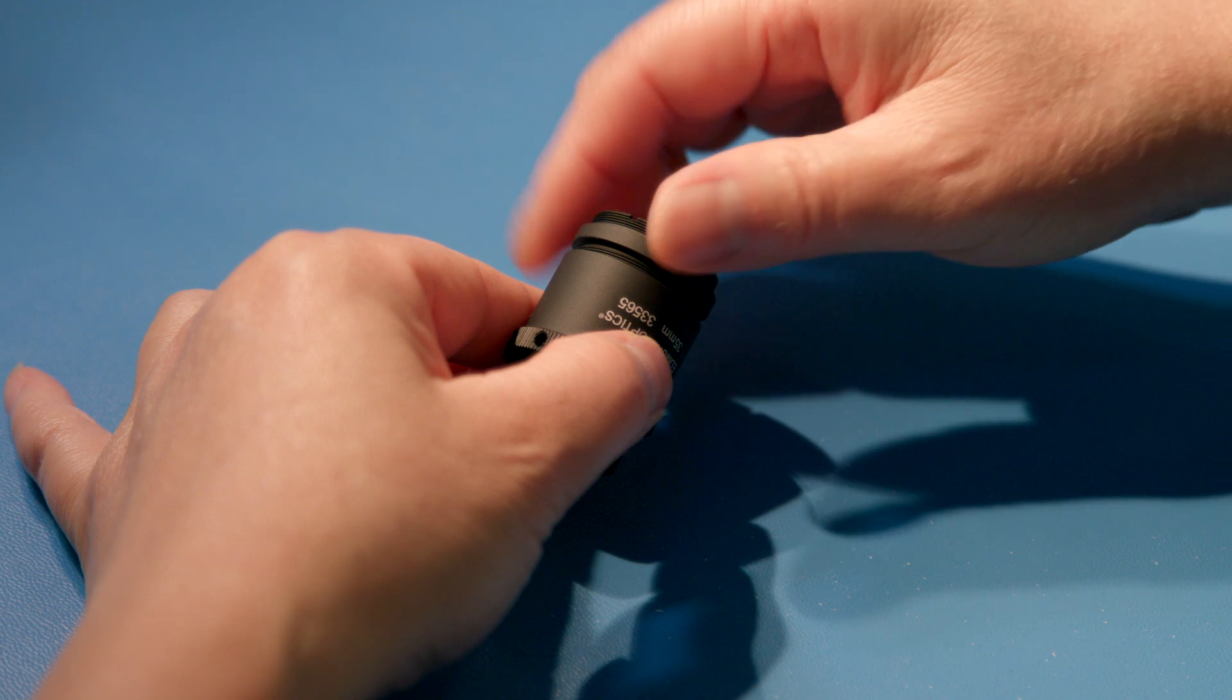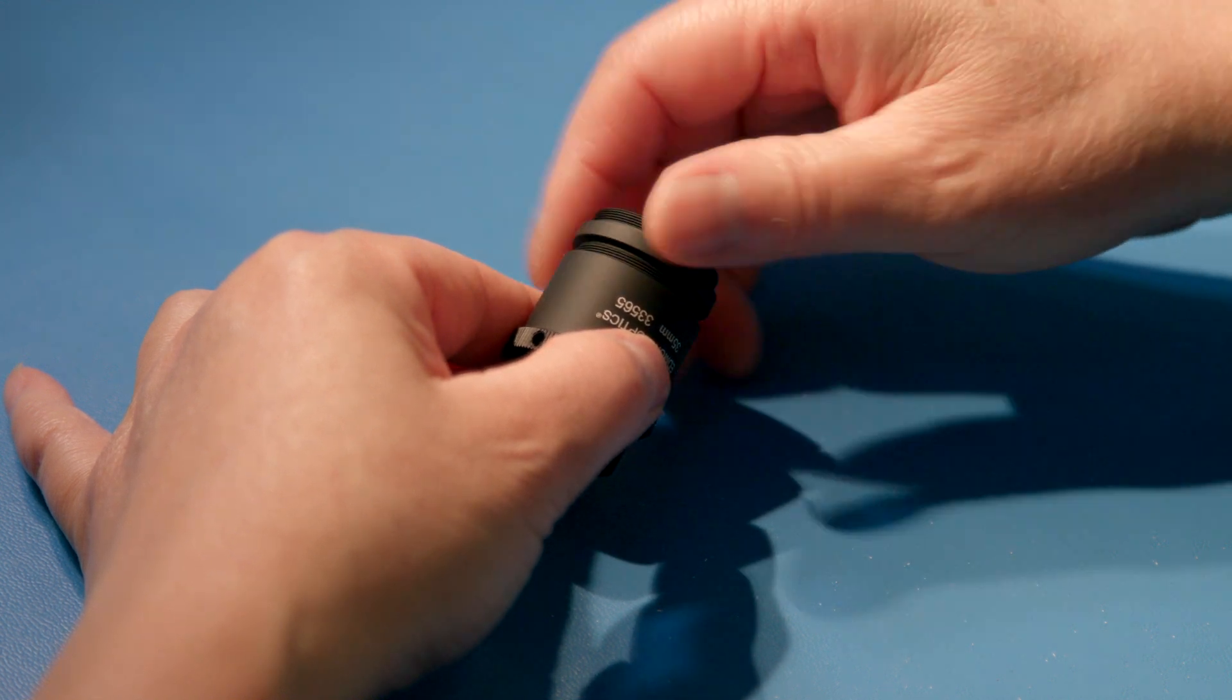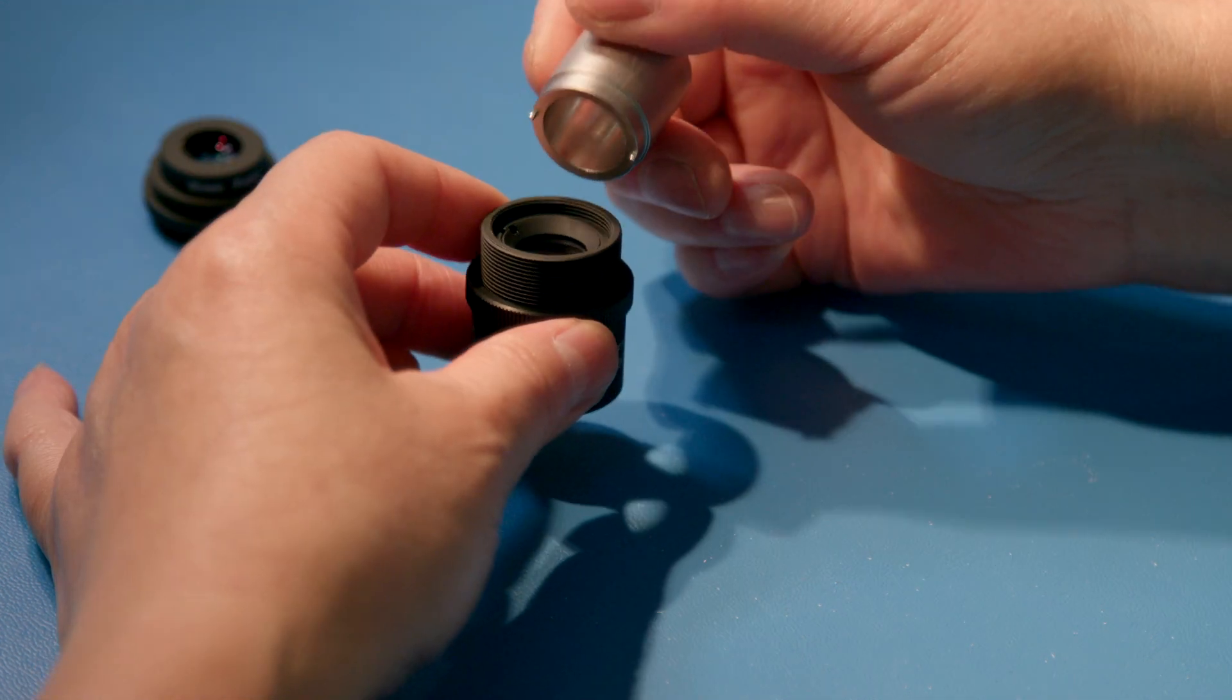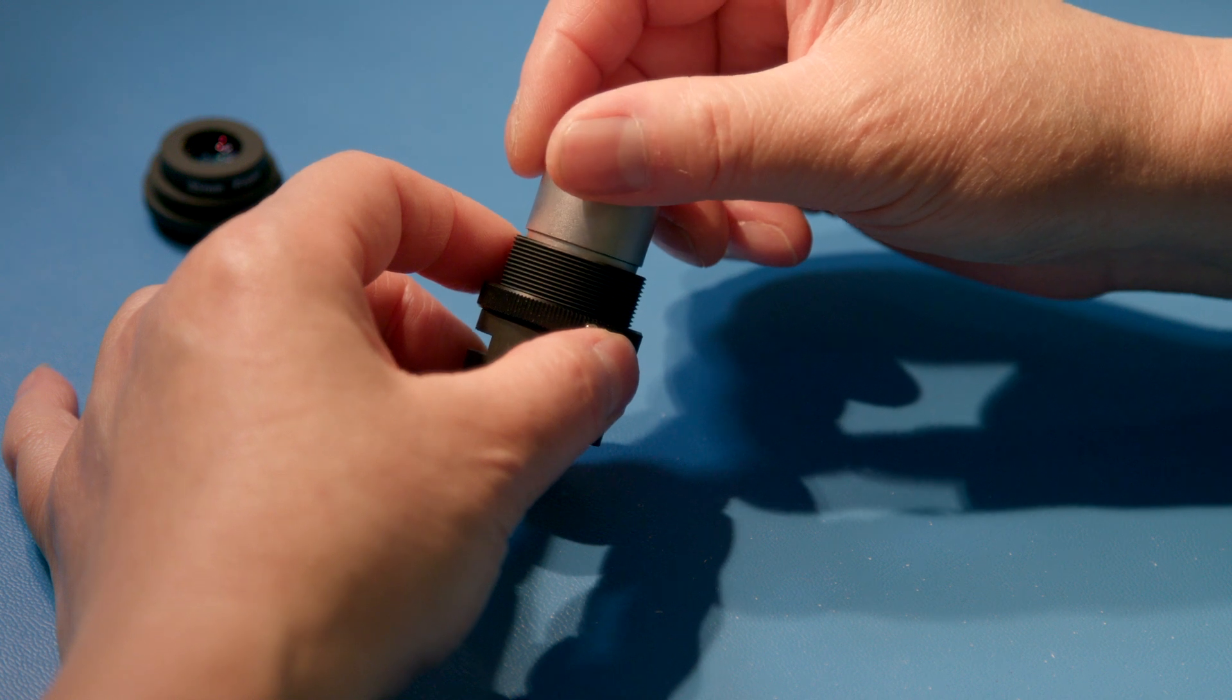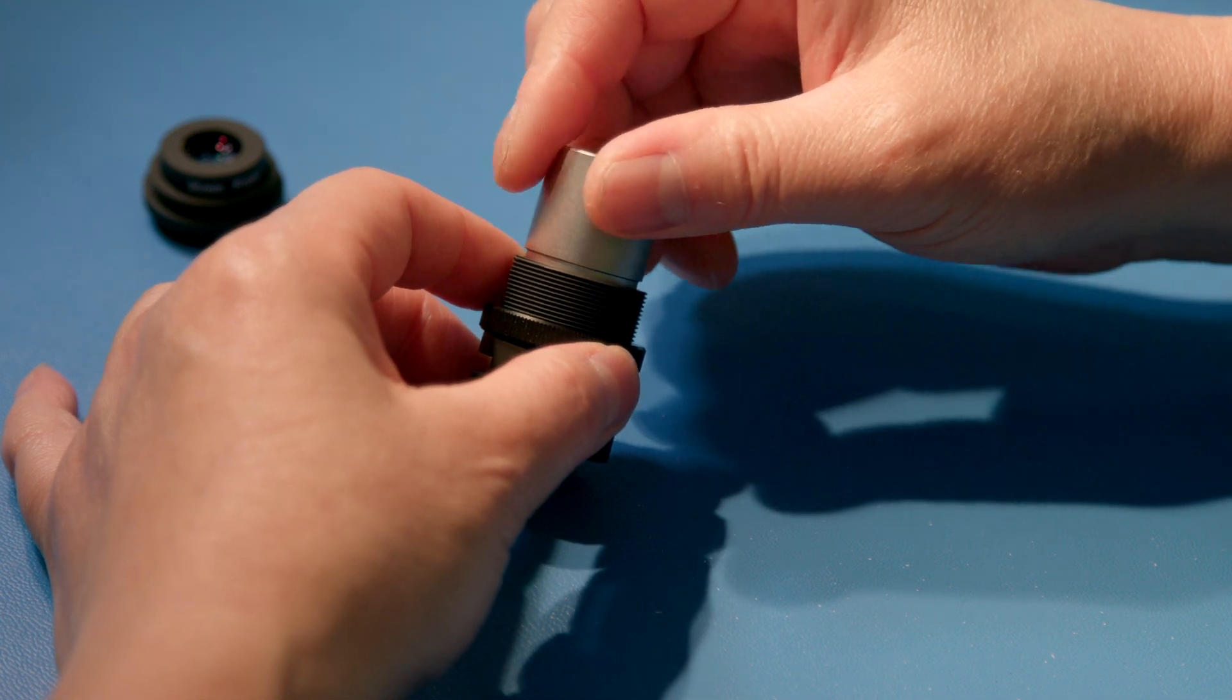To disassemble the CX Series assembly, remove the front assembly and then remove the rear assembly from the main housing using a spanner wrench.